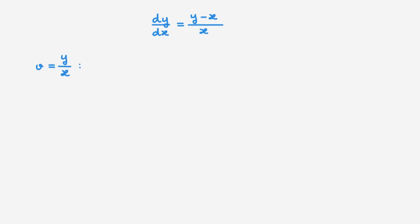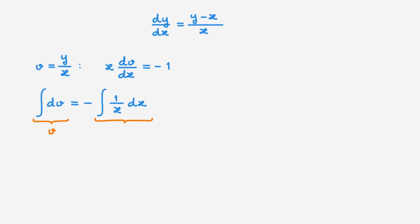This is now trivially separable, so we can move all v-dependent terms to one side and all x-dependent terms to the other side, then integrate both sides. The integral with respect to v gives v. For the right-hand side, we have the integral of 1/x, which is the natural logarithm of x. So overall we get v = −ln(x) + c. This is our solution in terms of v and x.